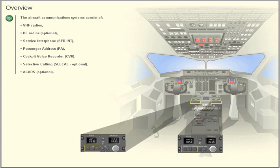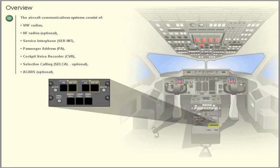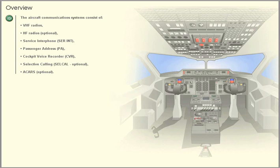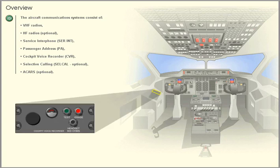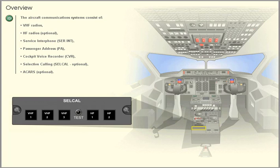Overview. The aircraft communication systems consist of VHF radios, HF radios (optional), Service Interphone, Passenger Address (PA), Cockpit Voice Recorder, Selective Calling (SELCAL, optional), and ACARS (optional).